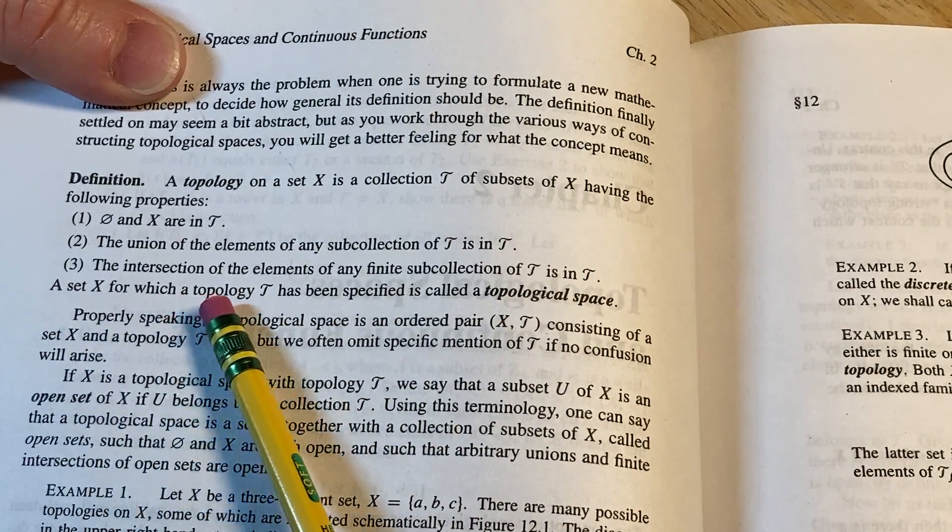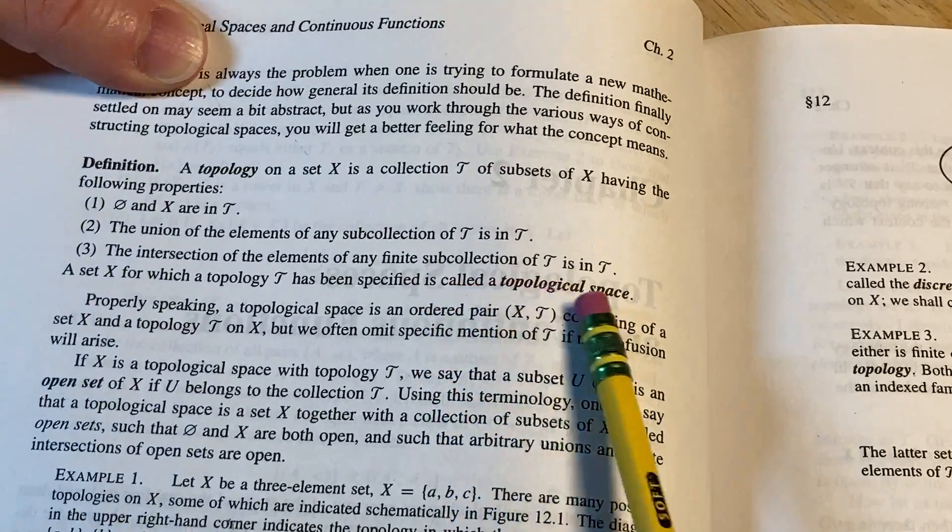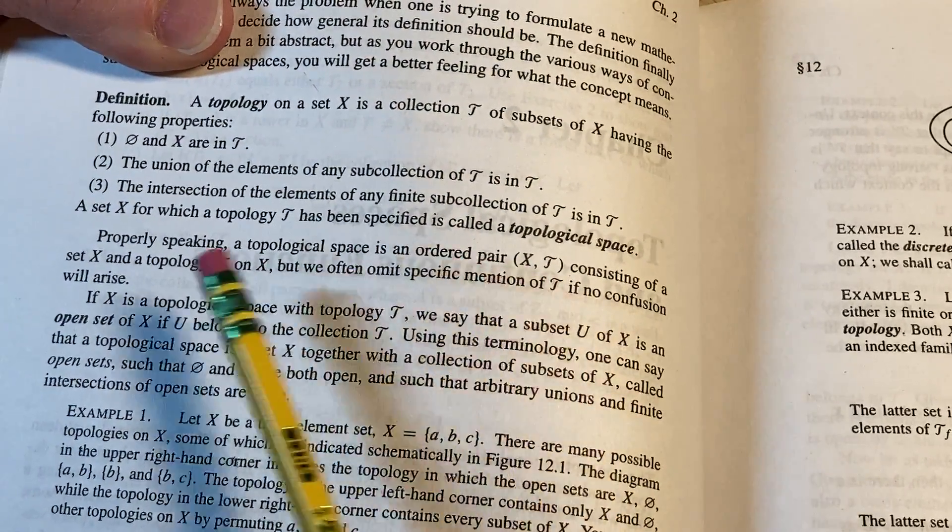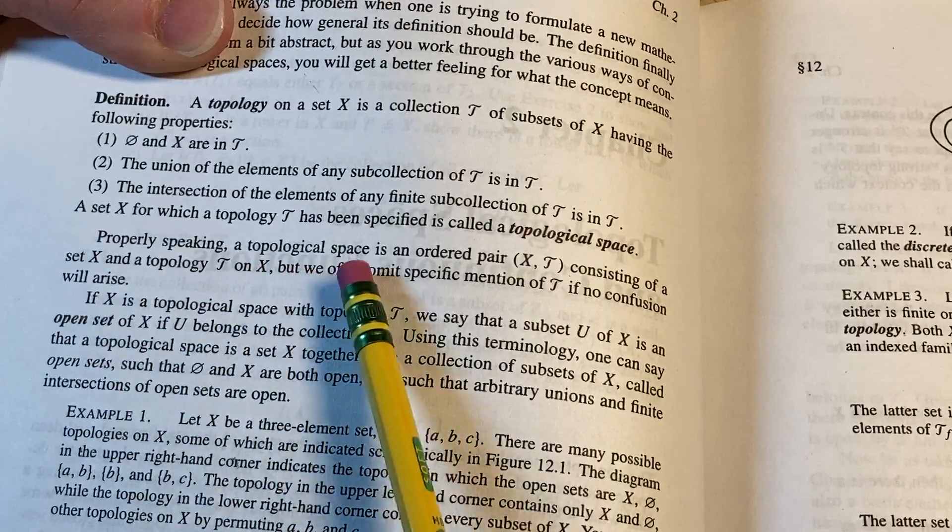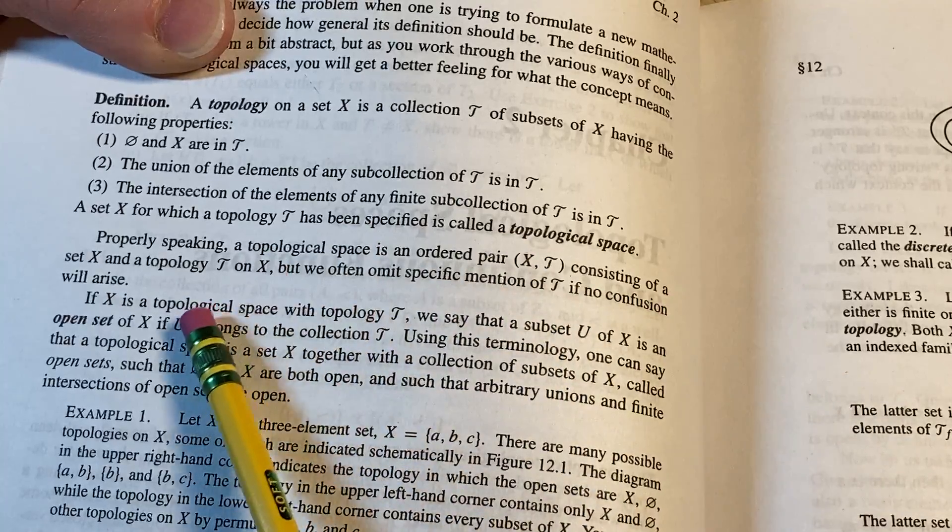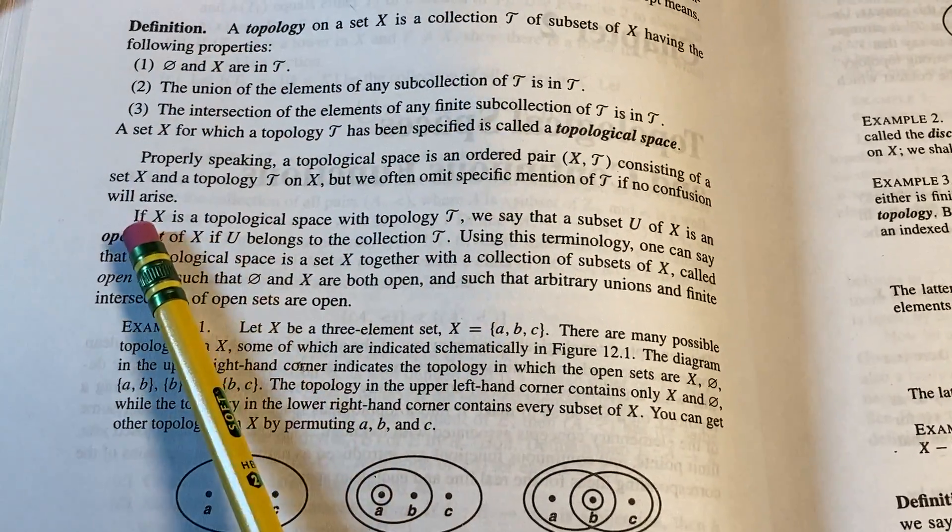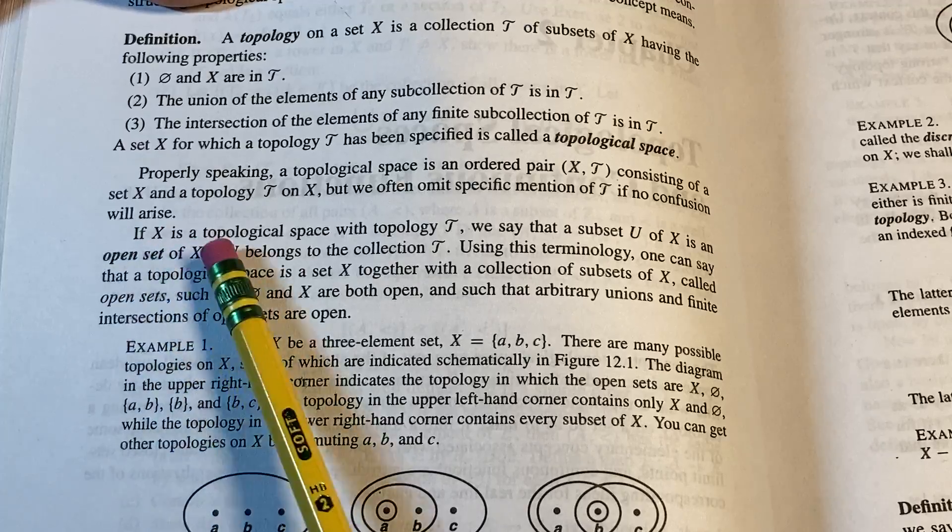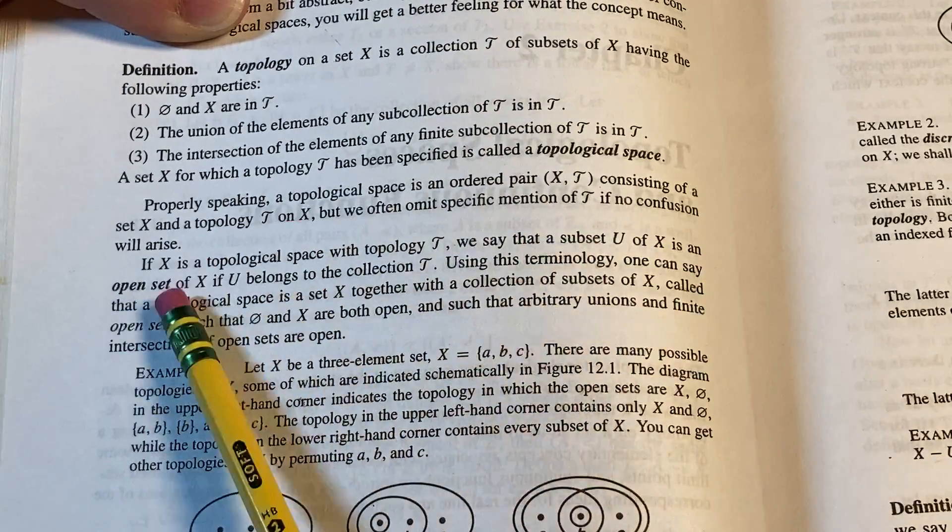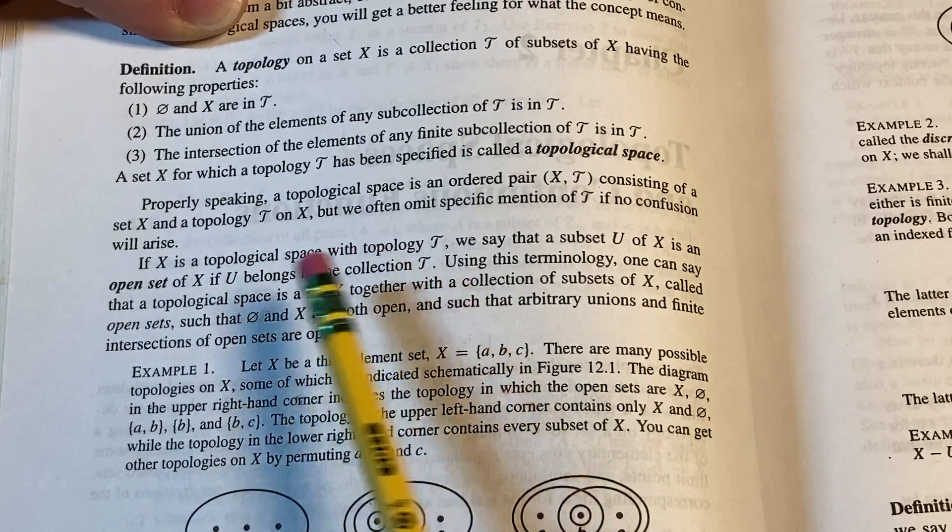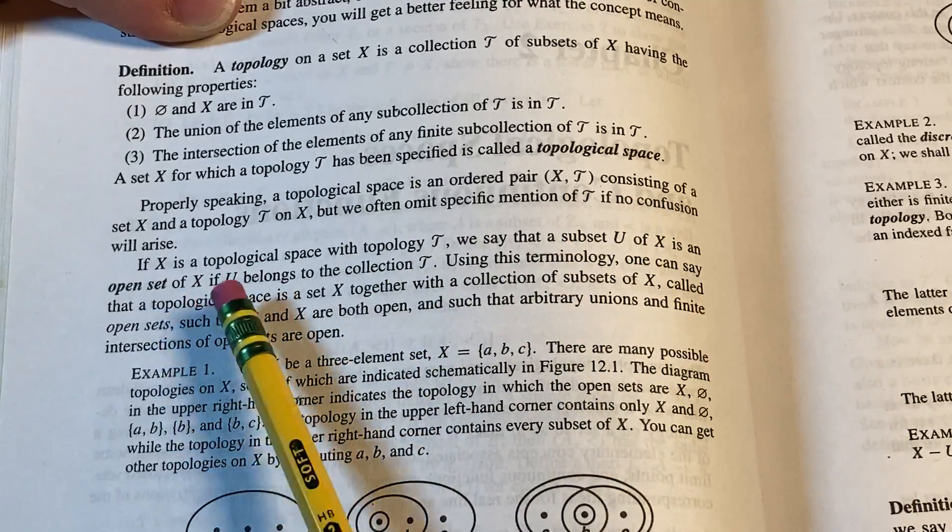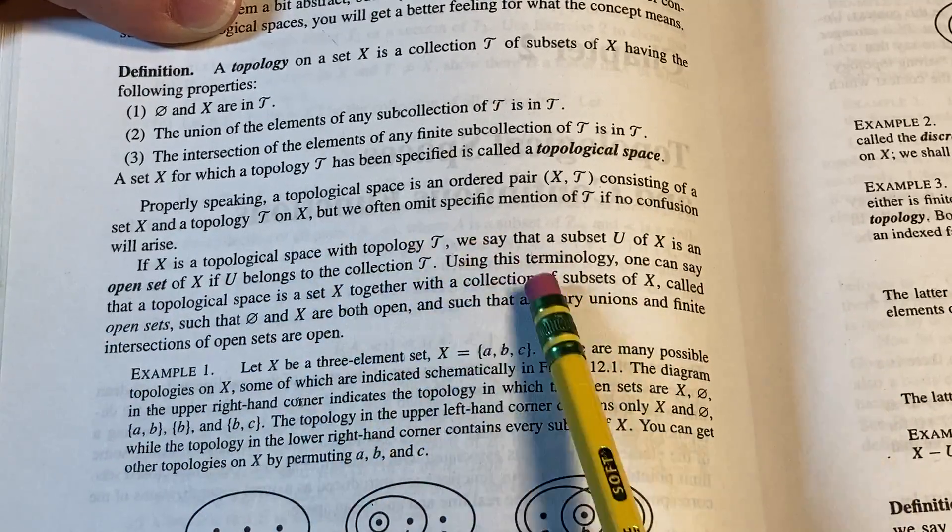A set X for which a topology tau has been specified is called a topological space. Properly speaking, a topological space is an ordered pair X, tau, consisting of a set X and a topology tau on X. But we often omit specific mention of tau if no confusion will arise. And you just call them open sets. Elements of tau are called open sets. If X is a topological space with topology tau, we say that a subset U of X is an open set of X if U belongs in the collection tau. So U is open in X or is an open set of X if U is an element of tau. The elements of tau are the open sets.